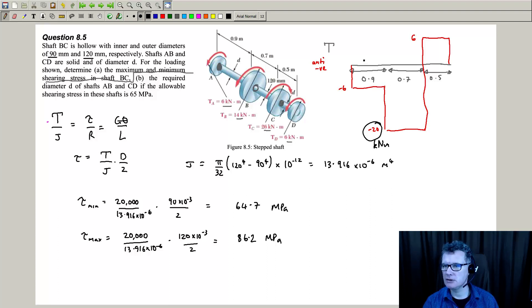So using my torque diagram here, you can see in the section AB and CD, they both have torques of 6 kilonewton meters, albeit one's going anti-clockwise and one's going clockwise. Not going to make any difference in terms of how things are getting twisted. One's going to twist in one way, the other one's going to twist the other way.